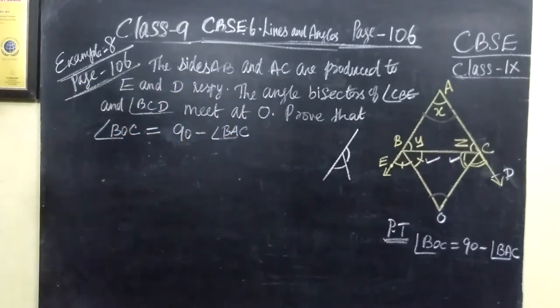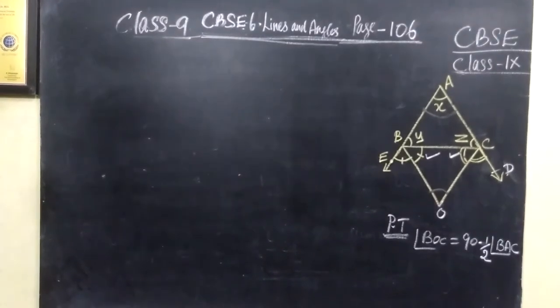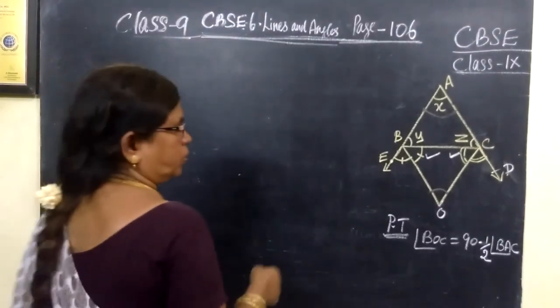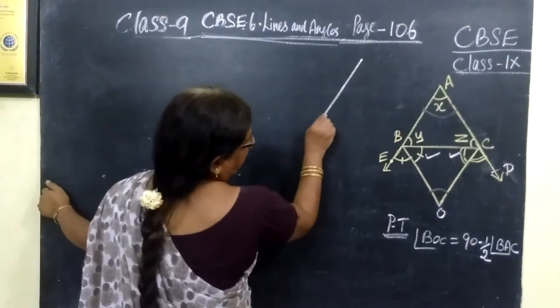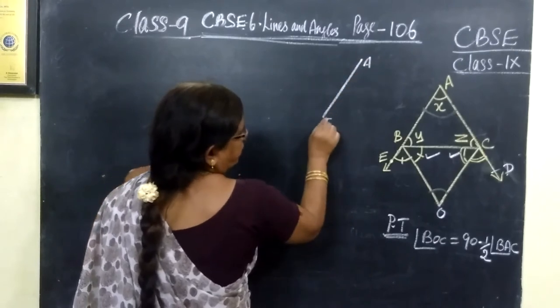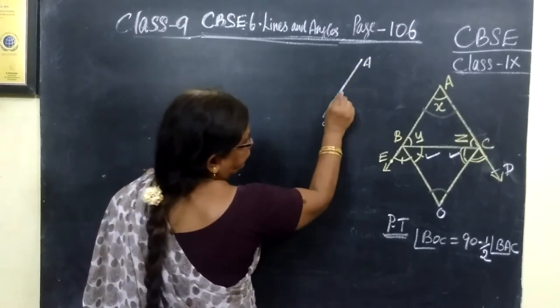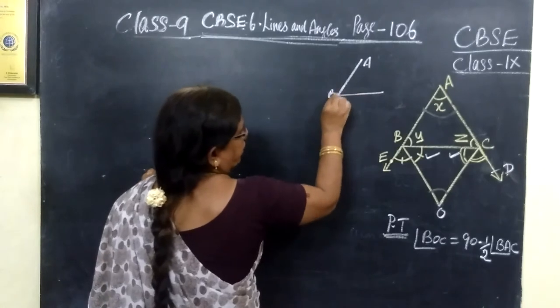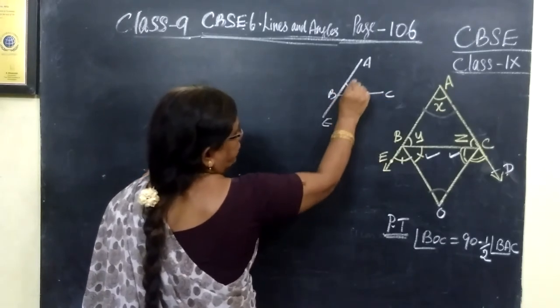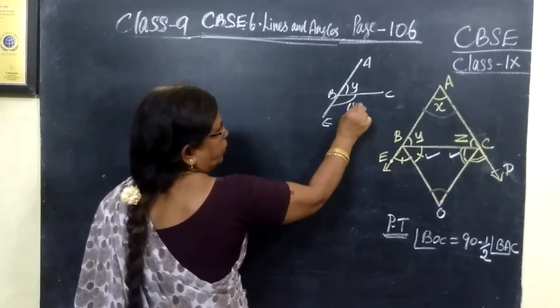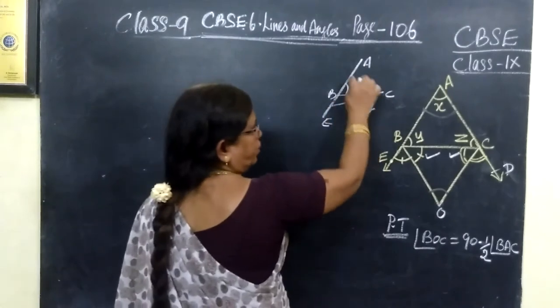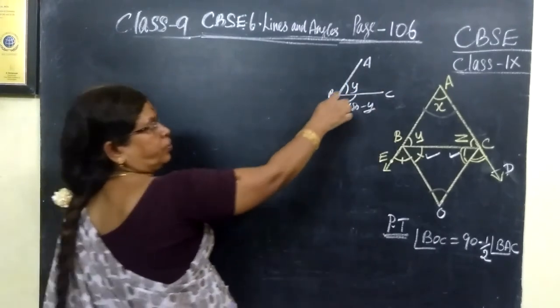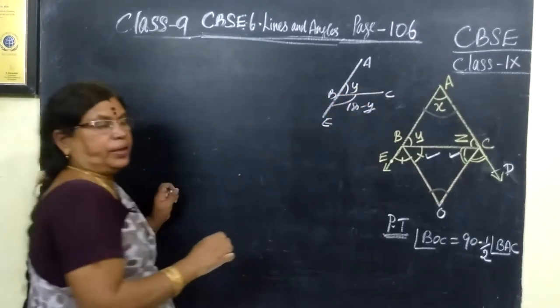This question we proved in this way. That is AE is a straight line and BC is a ray. Already this is Y. So definitely this will be 180 minus Y. So if a ray stands on a straight line, sum of the angle is 180 degree. So if it is Y, this is 180 minus Y.